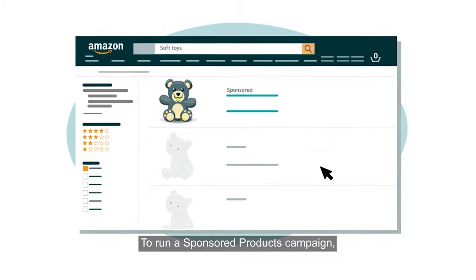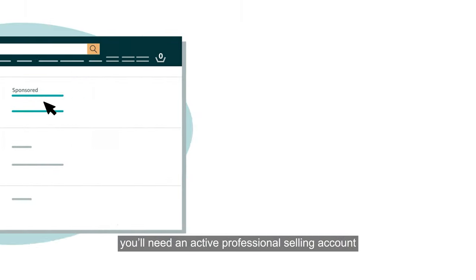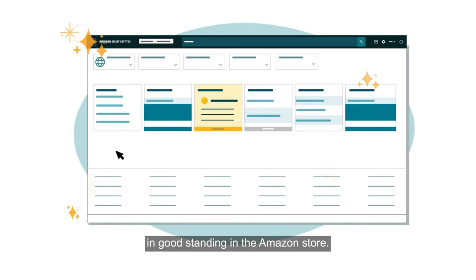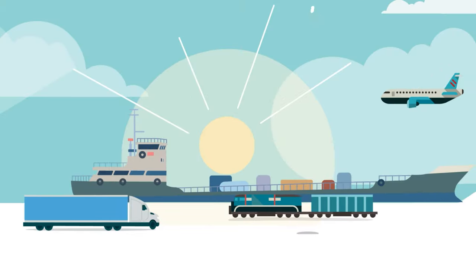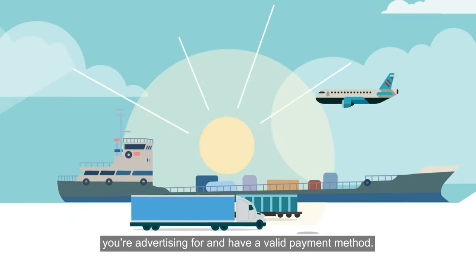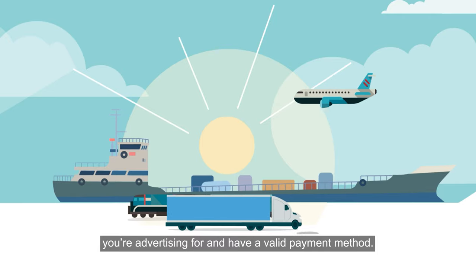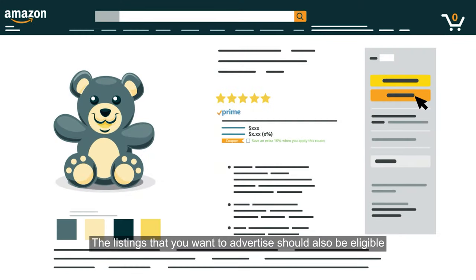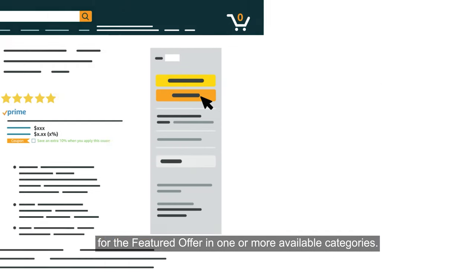To run a sponsored products campaign, you'll need an active professional selling account in good standing in the Amazon store. You'll also need to be able to ship to the country you're advertising for and have a valid payment method. The listings you want to advertise should also be eligible for the featured offer in one or more available categories.